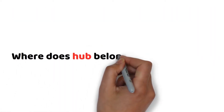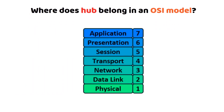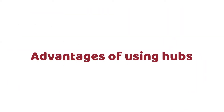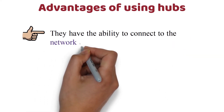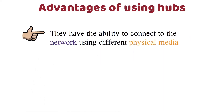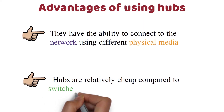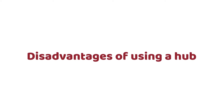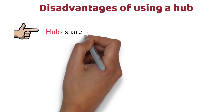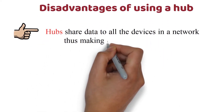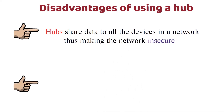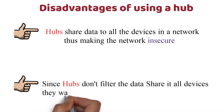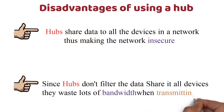Where does a hub belong in the OSI model? A hub is located in the physical layer of the OSI model, i.e., the first layer. Advantages: Hubs have the ability to connect to the network using different physical media, and they are relatively cheap compared to switches and other devices. Disadvantages: Hubs share data to all the devices in a network, making the network insecure. Since hubs don't filter the data, they waste lots of bandwidth when transmitting data.